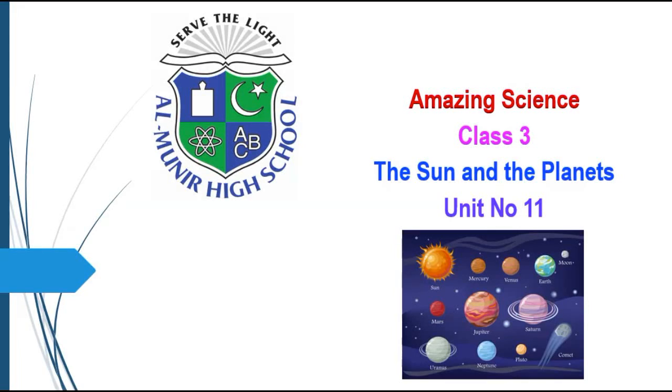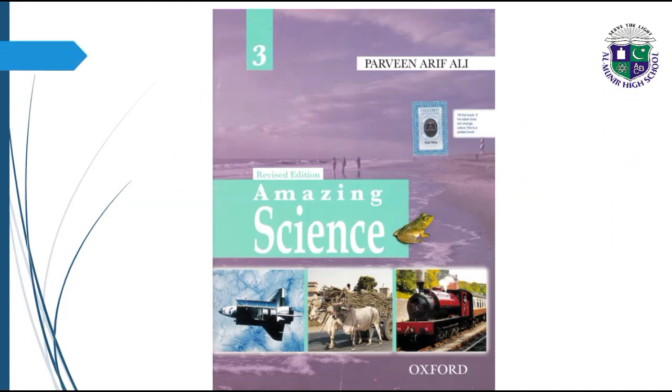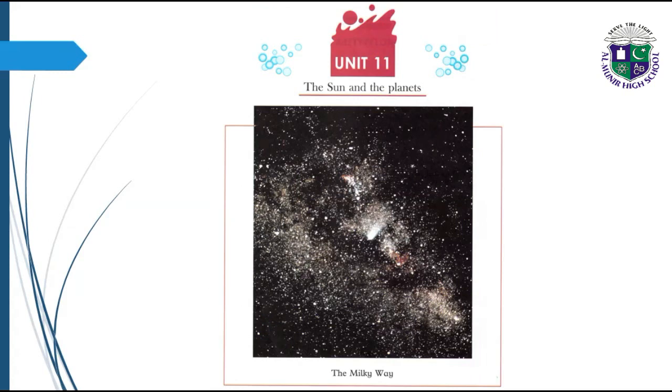Welcome to Al-Muneer High School e-learning system, Class 3. This is your science lecture. Today we are going to discuss Unit Number 11: The Sun and the Planets. This is the title page of your Amazing Science book, Oxford's publication. Unit Number 11, the topic is The Sun and the Planets. This is the picture of the Milky Way.